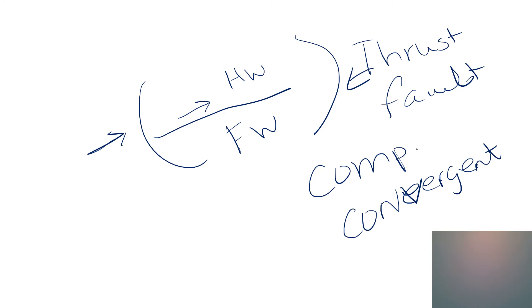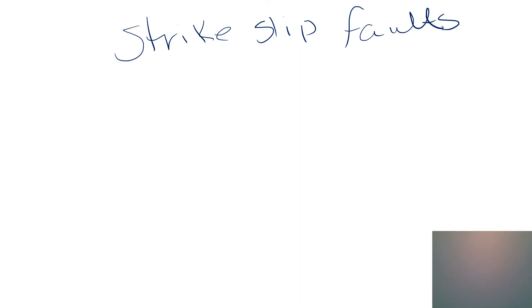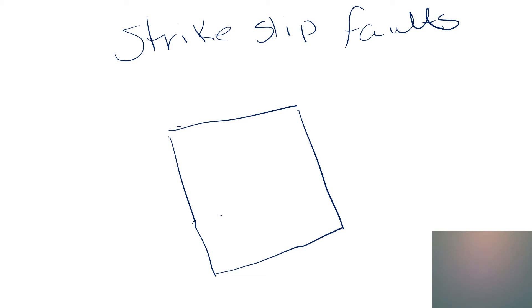Let's go to strike-slip faults. Strike-slip faults are where the movement is in the horizontal plane. Where the views of the reverse fault and the normal fault would be like a vertical cross-section — like driving beside a big road cut — with strike-slip faults our view is like a bird's-eye view, the same view we'd get from an airplane. We see a road here and then the other part of the road there; the movement is along the strike of the bedrock.